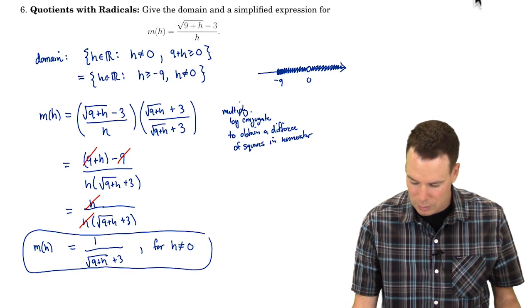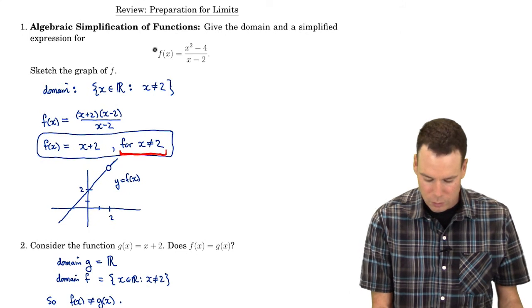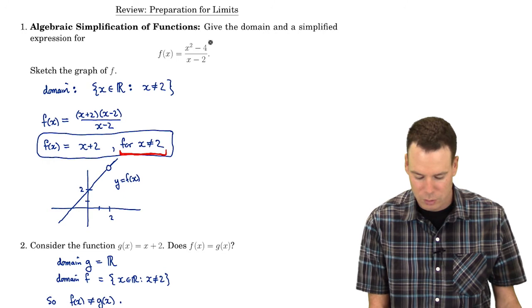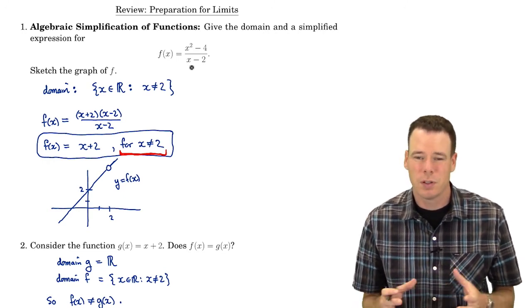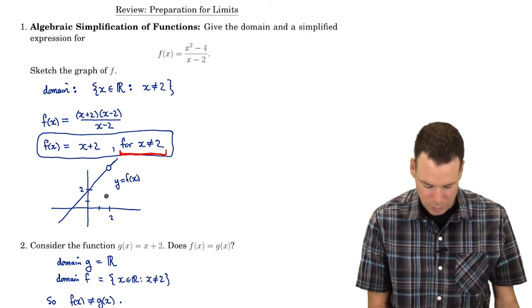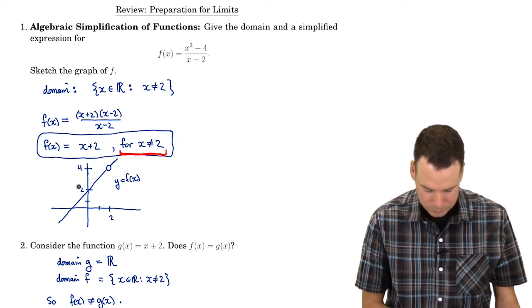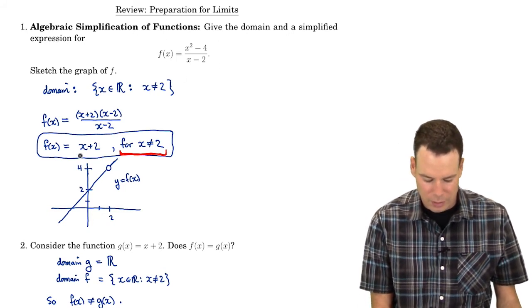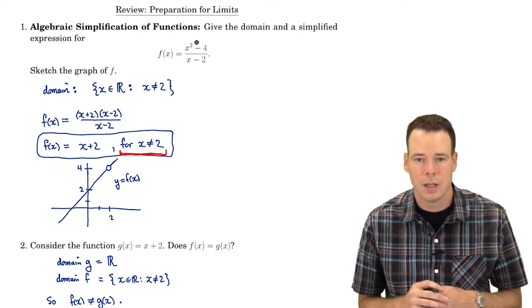We can see that with our first example that we did as well. So our original function here very first example when x was equal to two we weren't allowed to plug that in so two is not in the domain. But I could ask what's the function doing around two? Well when we look at our simplified expression we can see oh the values of the function for x around two they're close to four. So this was our original function.